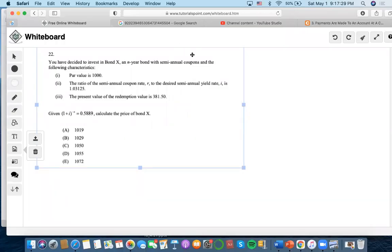All right, so this problem decides to invest in bond X at an end year with semiannual coupons. We'll start with the par value, which is 1,000.